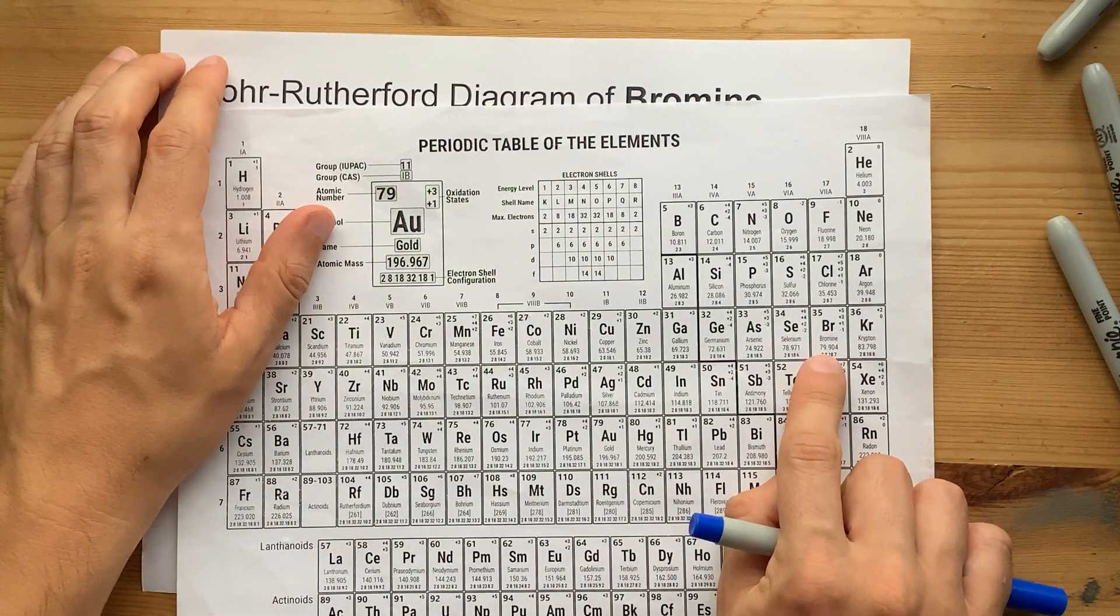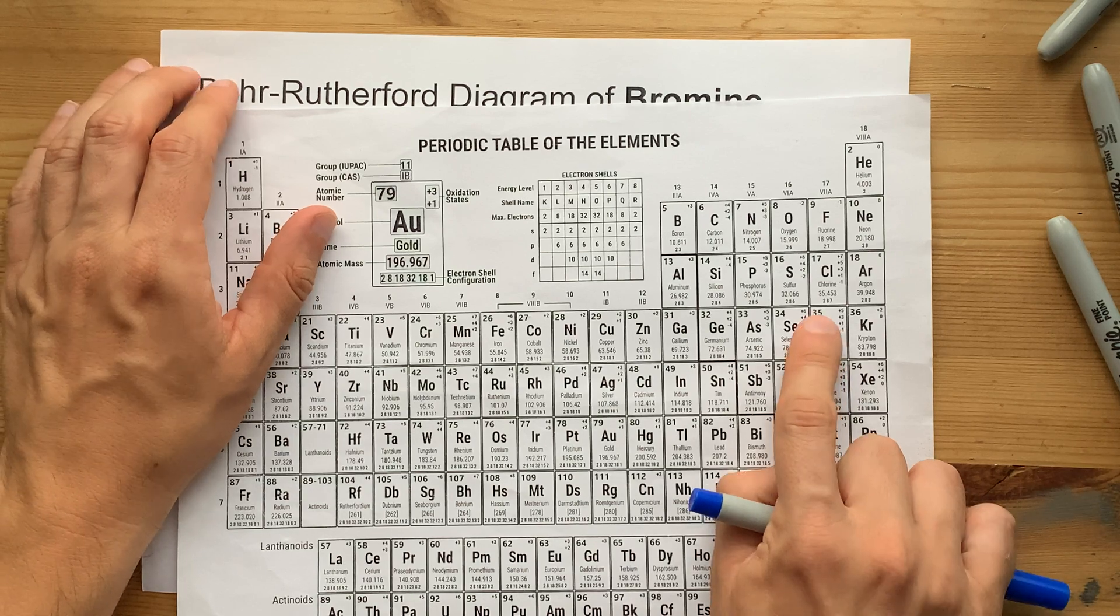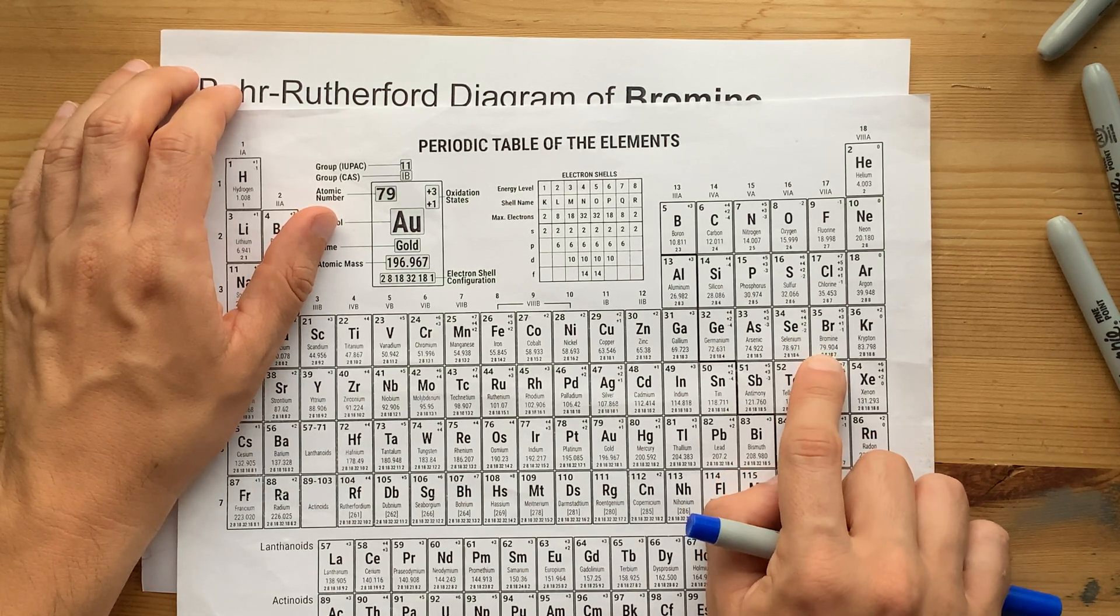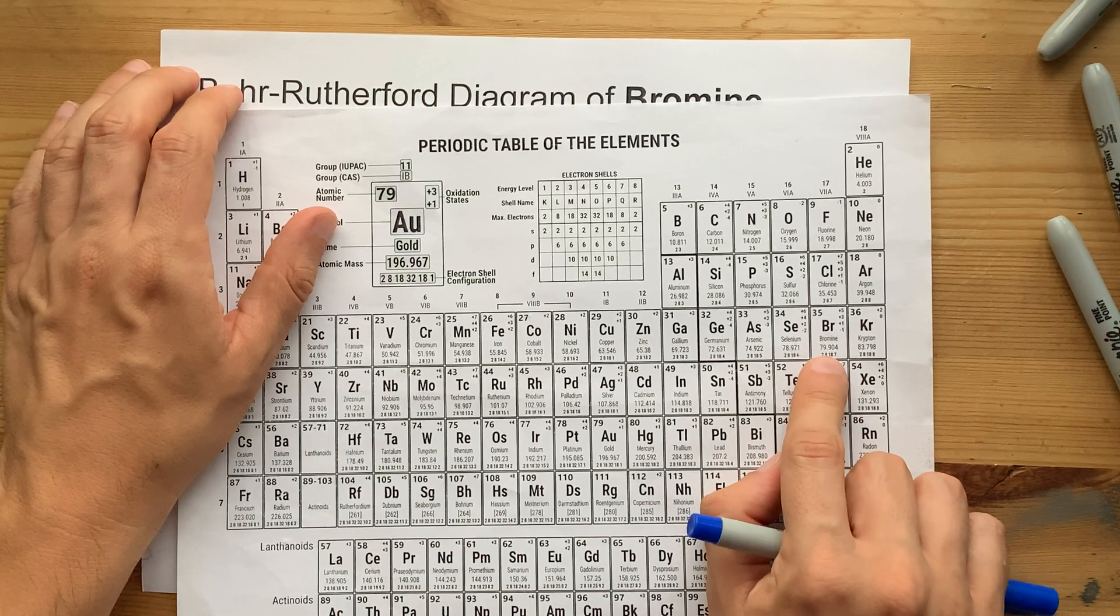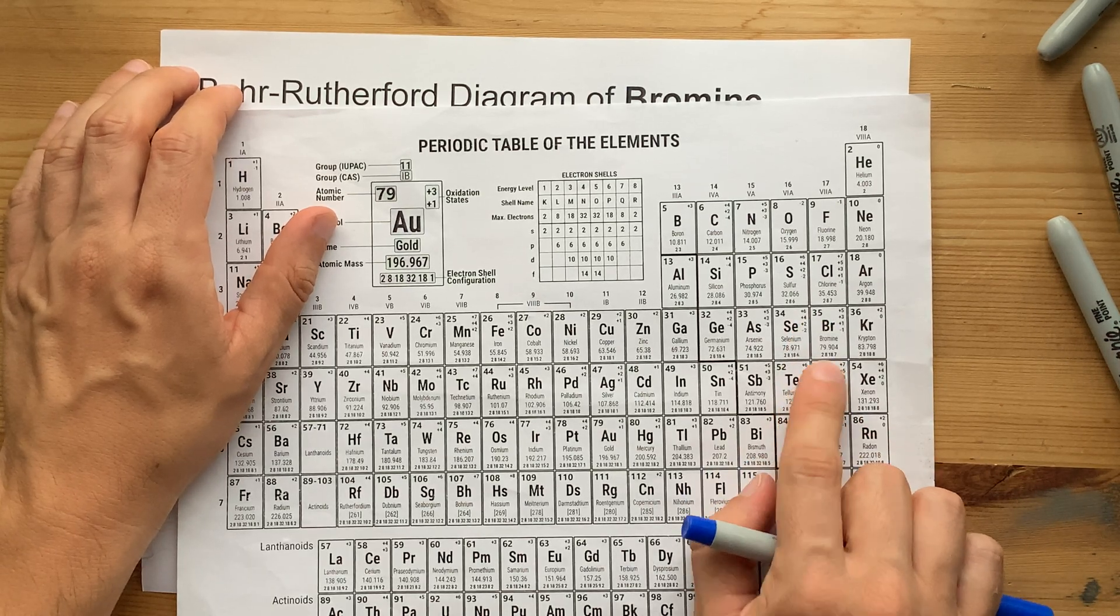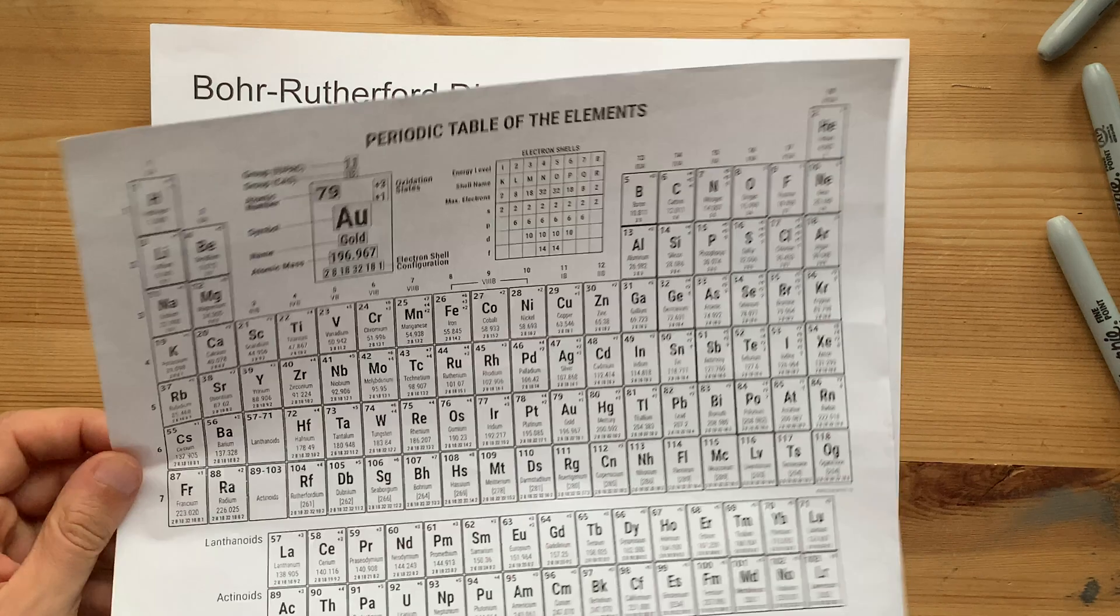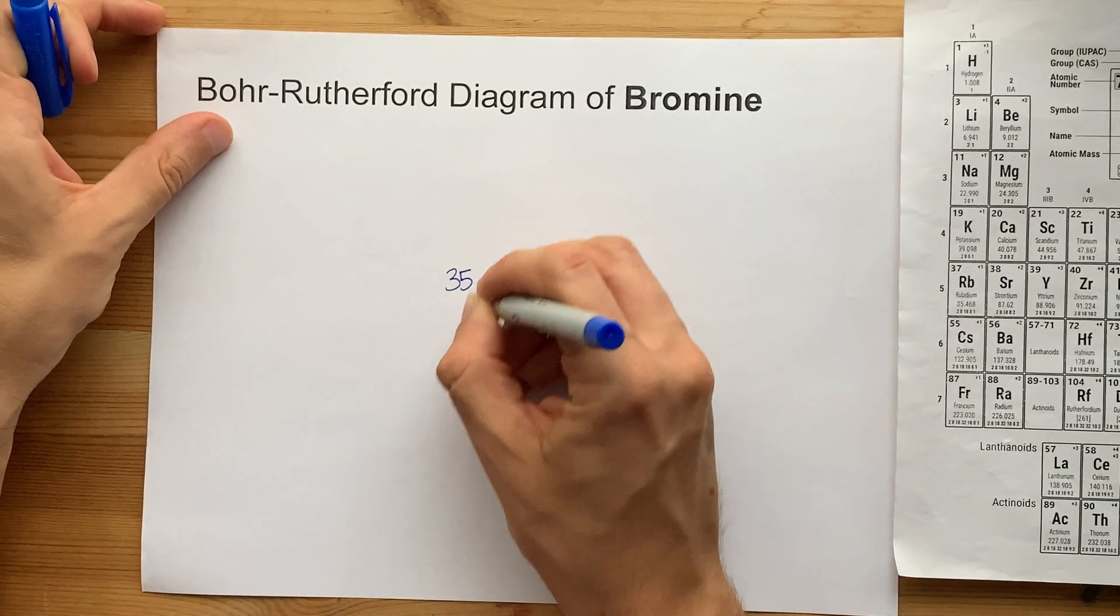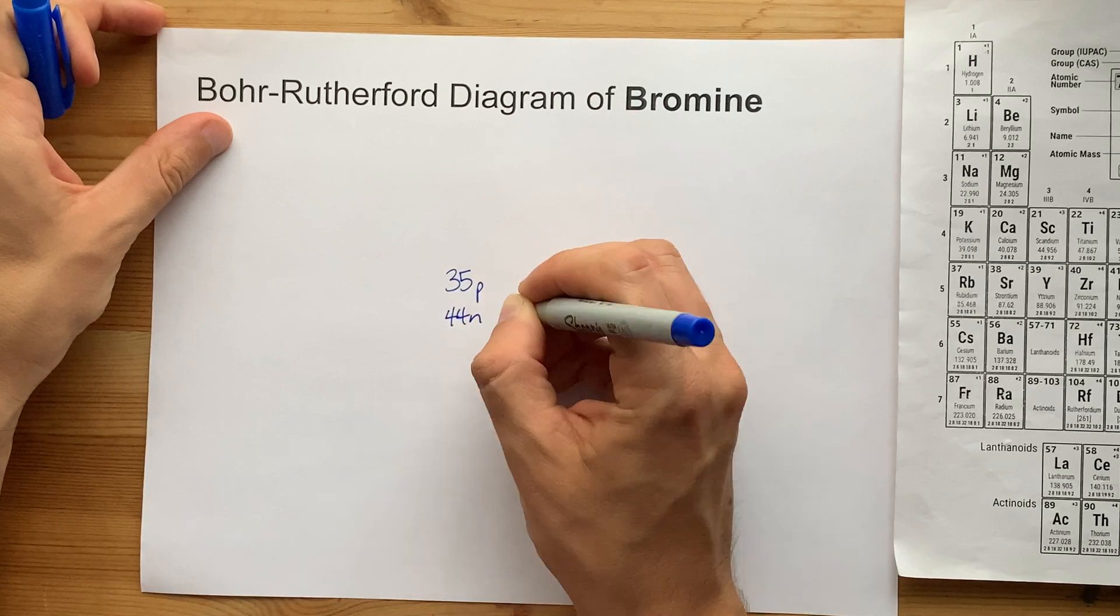Let's assume that this is supposed to be 79. 35 protons and 79 as the mass. The number of neutrons is 79 minus 35. That's 44. So that's 35 protons and 44 neutrons.